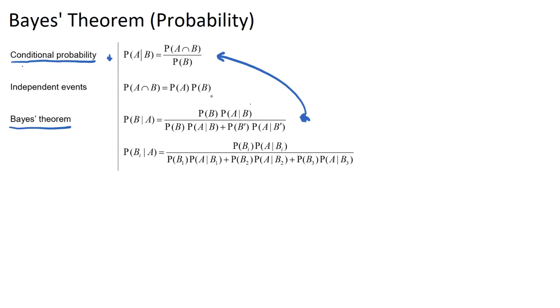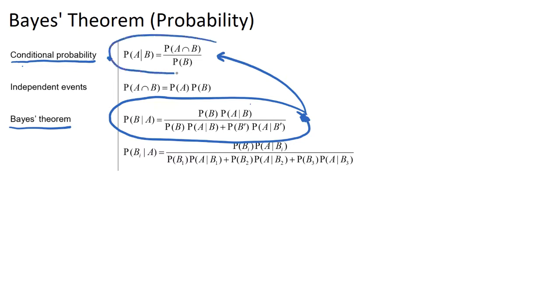So this was his first attempt at having a formula for the probability of something given something, and then this simplified version was developed a little bit after that.